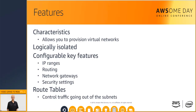For a subnet to be public, you need to attach an internet gateway to the VPC and update the route table of the public subnet to send non-local traffic to the internet gateway. Amazon EC2 instances also must have a public IP address to route to an internet gateway.